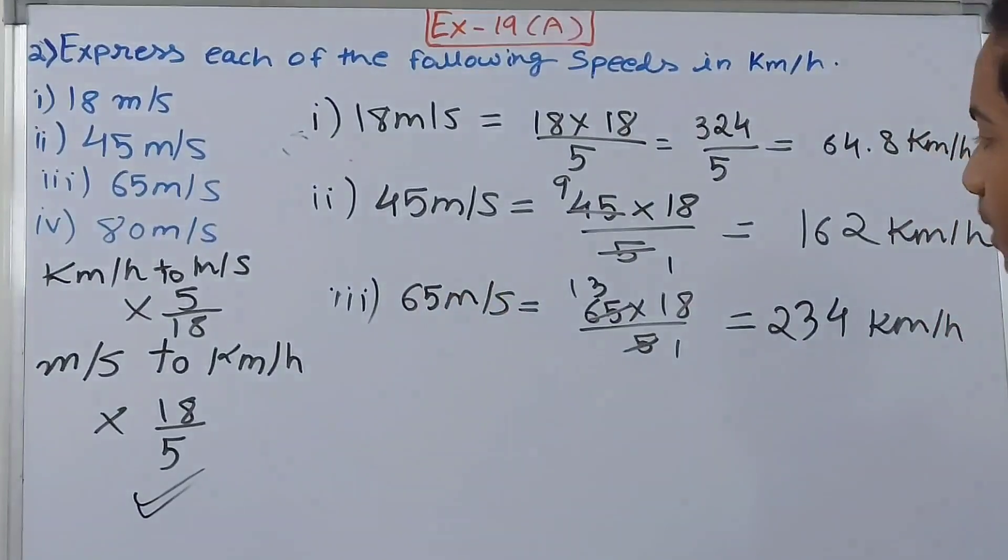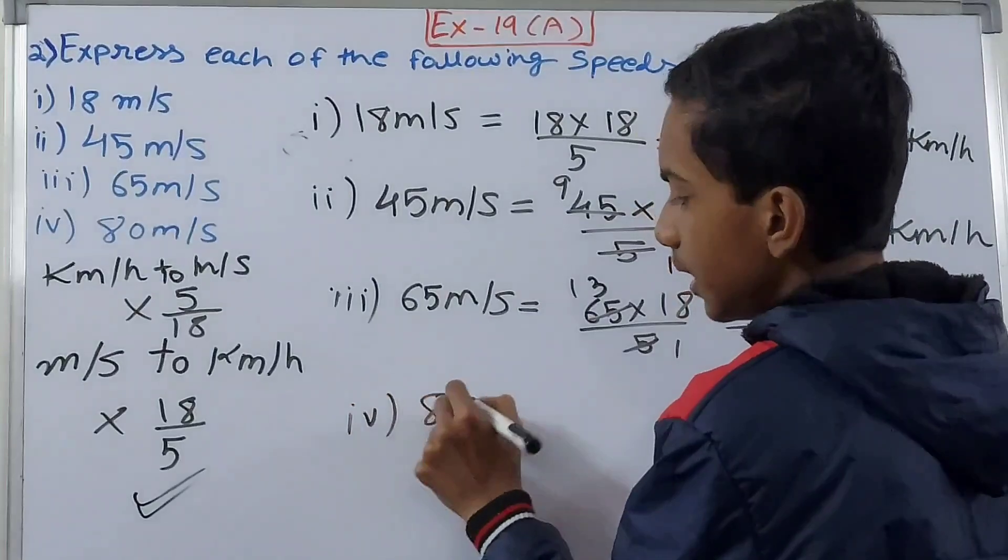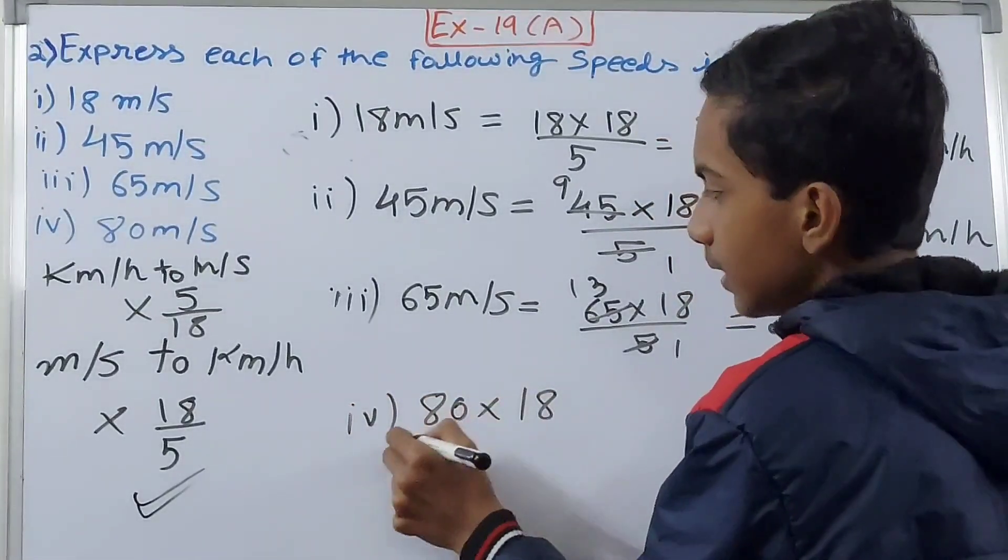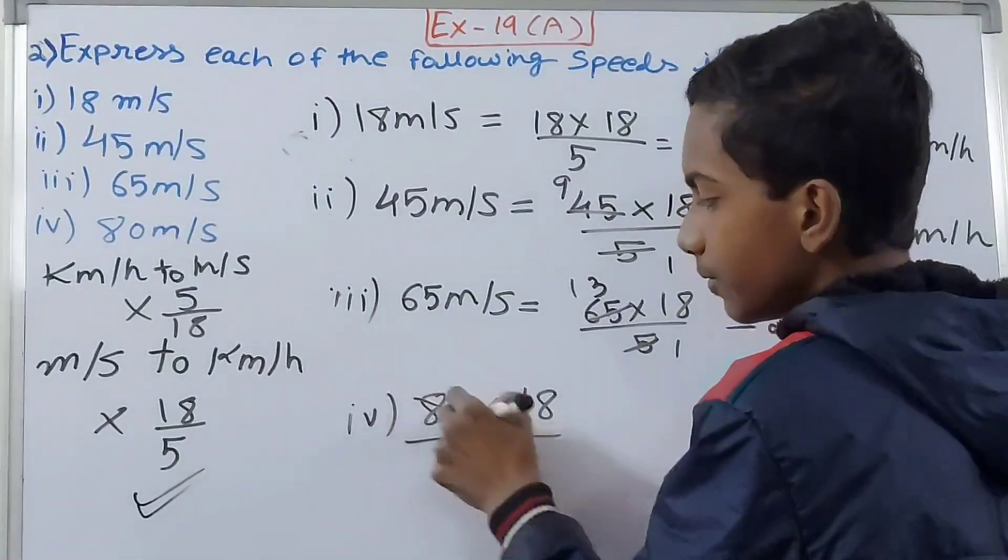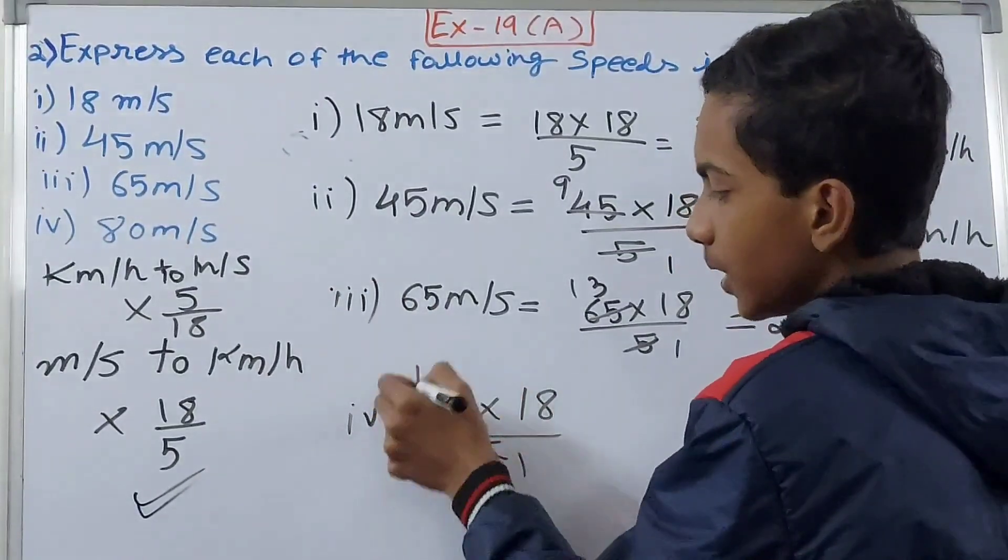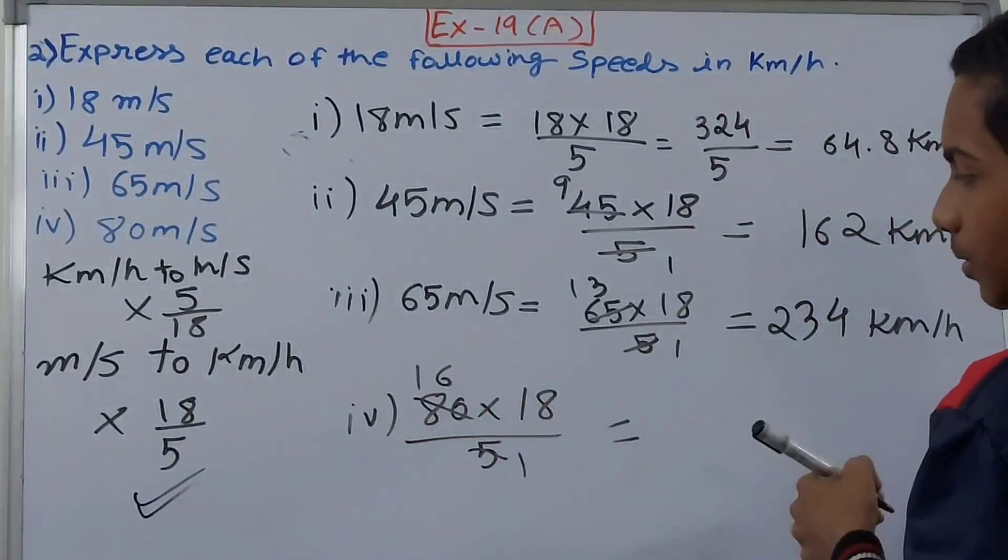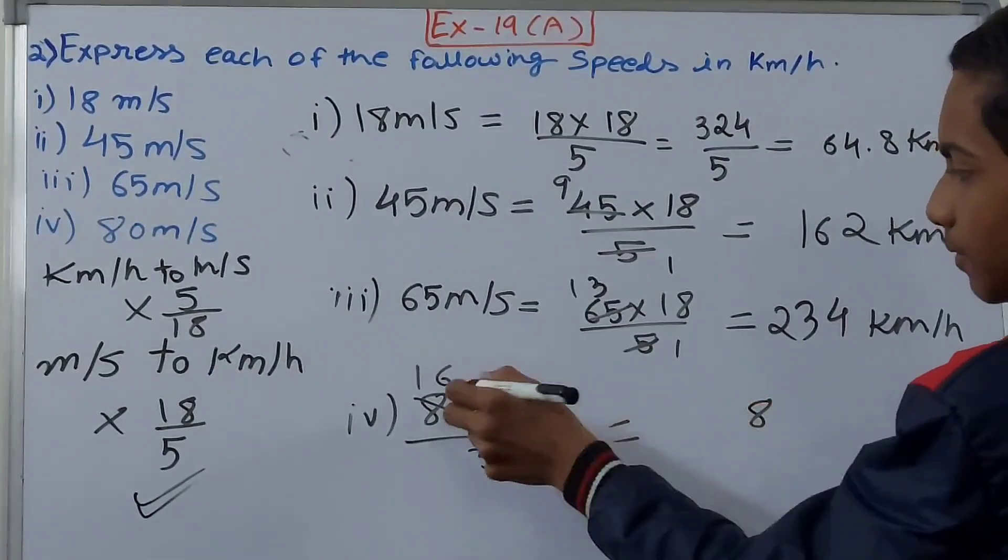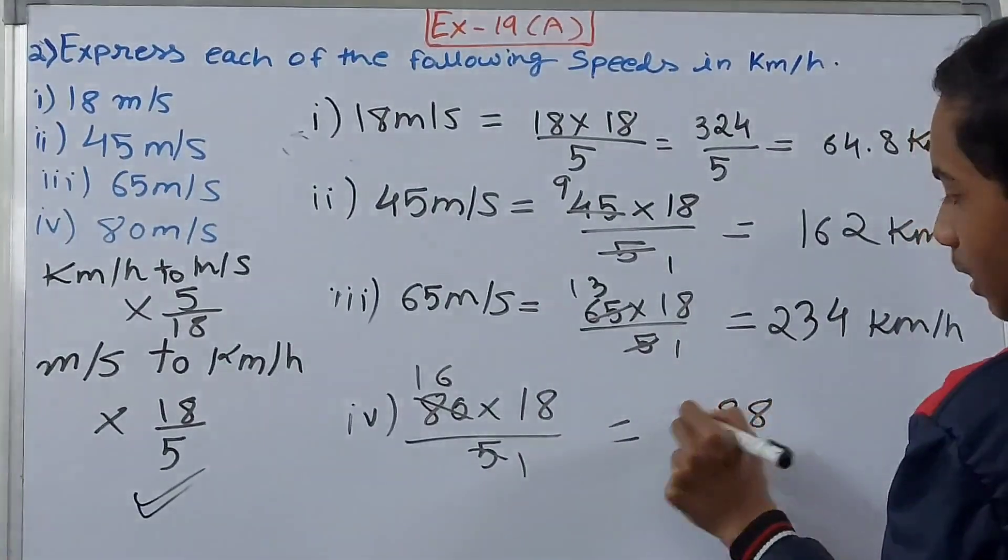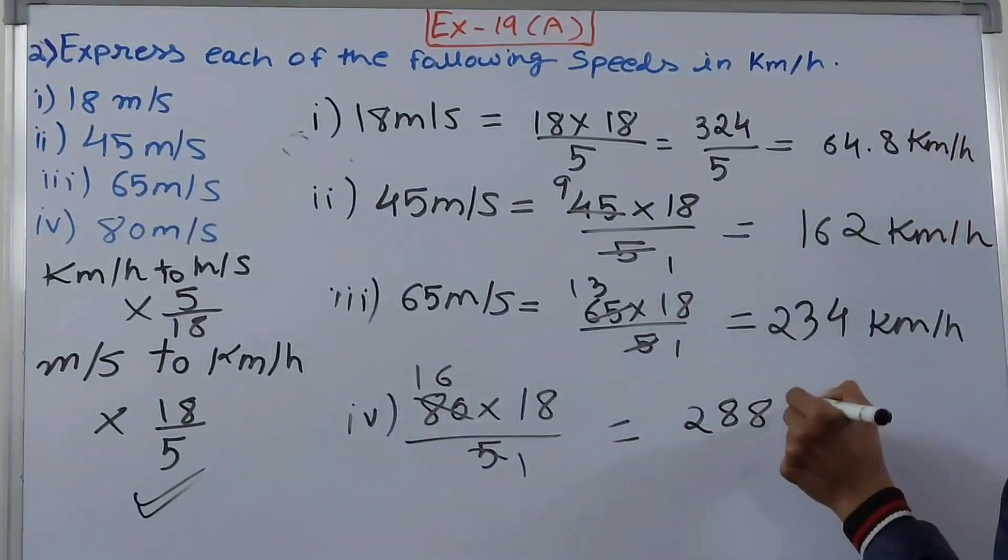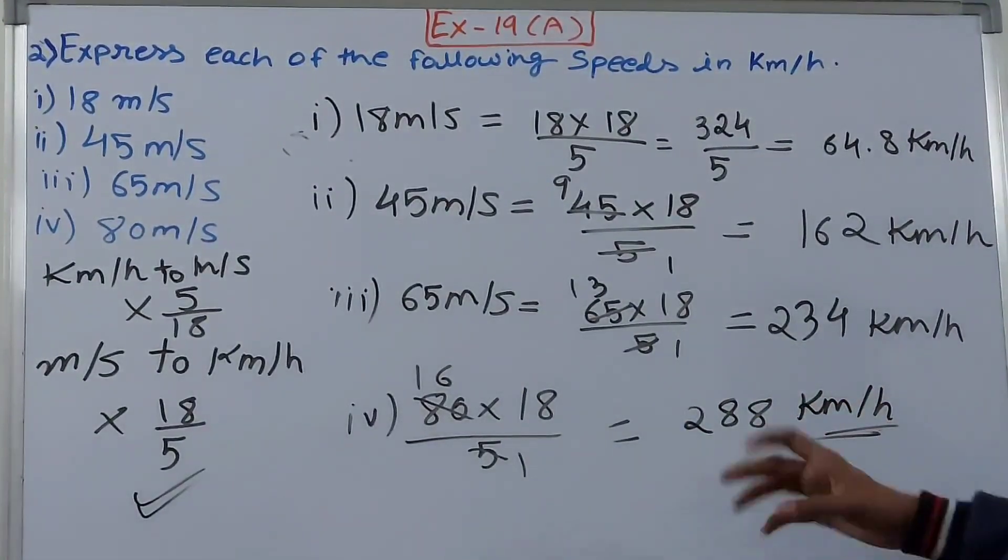The fourth one: the speed is 80 meters per second, so 80 × 18/5. Cancel to get 16 × 18, which equals 288 kilometers per hour. This is how we convert speed from meters per second to kilometers per hour.